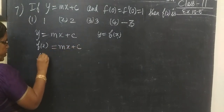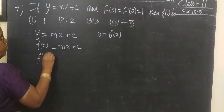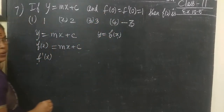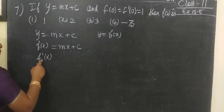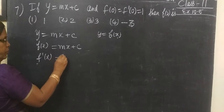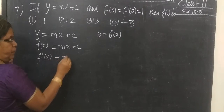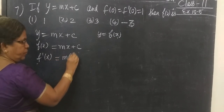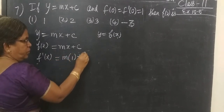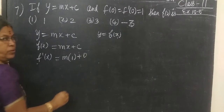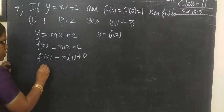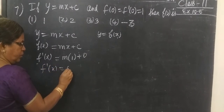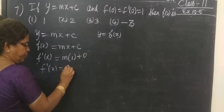Now, f'(x). Since we differentiate mx plus c — the differentiation of mx with respect to x gives m, and the differentiation of constant c gives 0 — so f'(x) equals m.